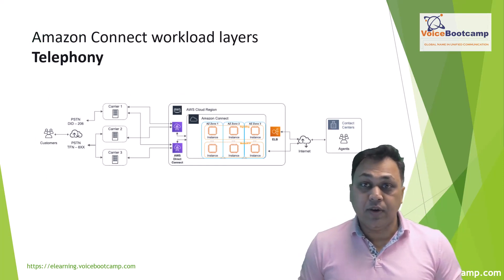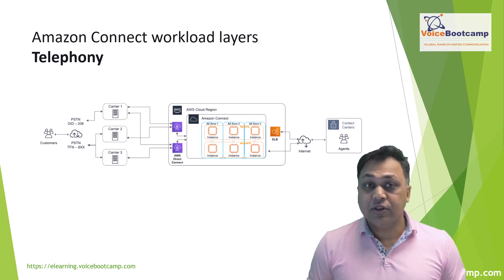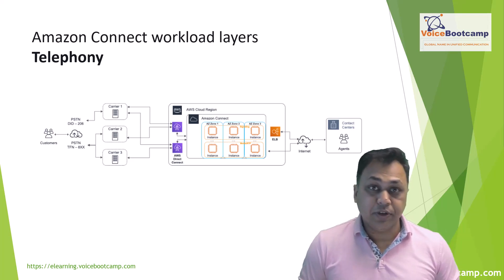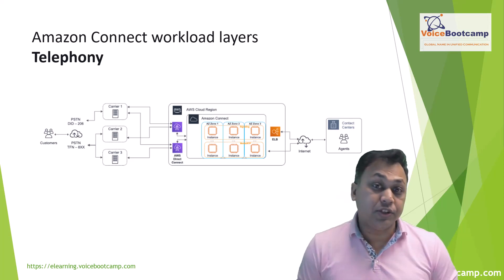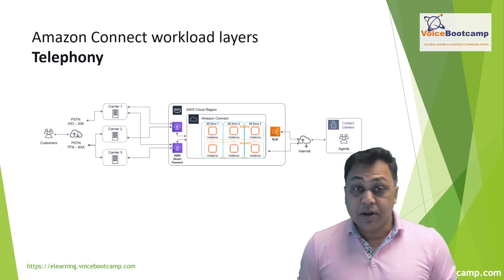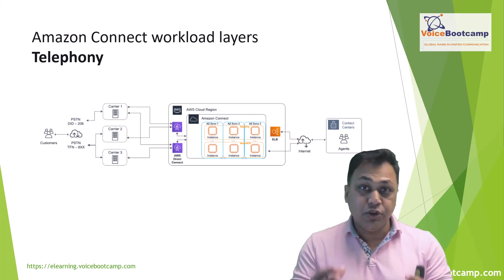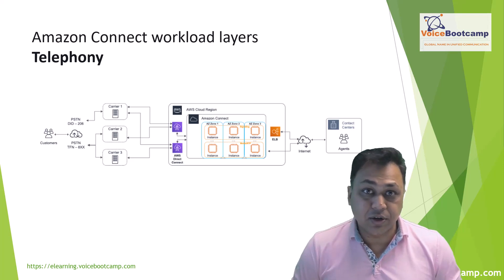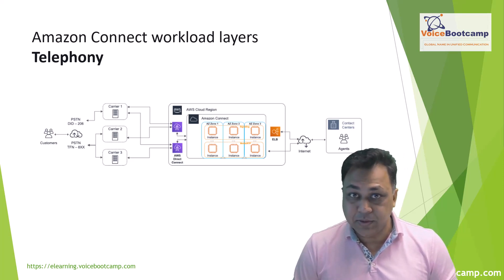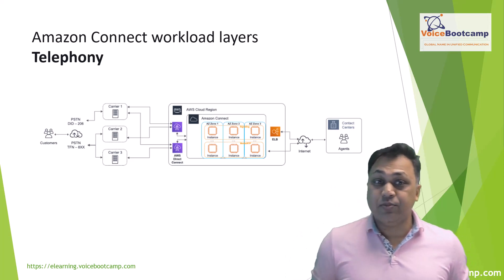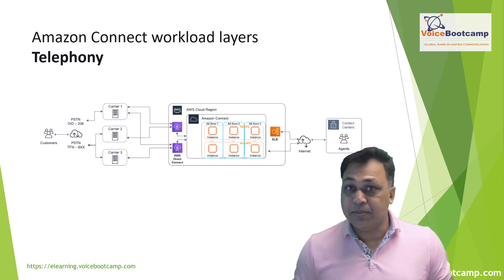Amazon Connect is integrated with multiple telephony providers with redundant dedicated network paths to three or more availability zones. It is not available in every country — only in certain regions. One drawback as of December 2023 is that Amazon Connect does not allow you as a customer to bring your own telephony provider. You have to rely on the telephony provider supplied by AWS, though this may change in the future.